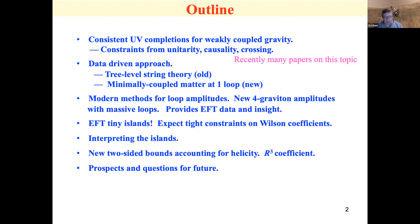The way we get this data is we throw all the modern techniques at it. We computed a four-graviton amplitude with massive loops, and for reasons that are a little unclear to me, this hadn't been done before. We then used this information to provide low energy EFT data and insight. The first thing that hits you — you see it immediately — is that the data lives on tiny islands.